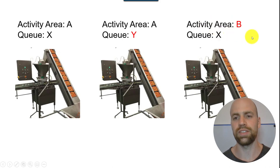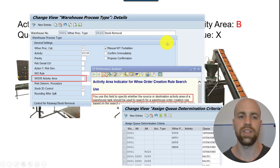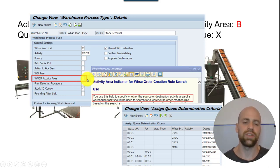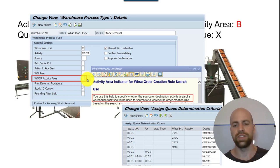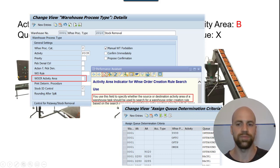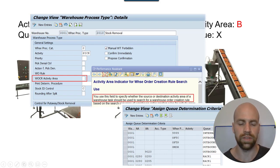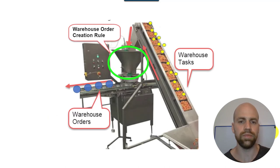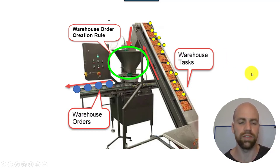The activity area in this context is either the source or the destination activity area, and that is determined based on the warehouse process type used for the warehouse task creation. There is one parameter that says whether we use the source or the destination. And the queue — I think that's obvious — every warehouse task has a queue, and that's another separation criterion here.